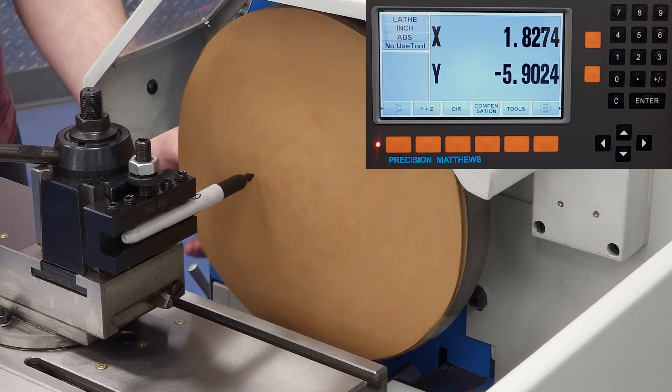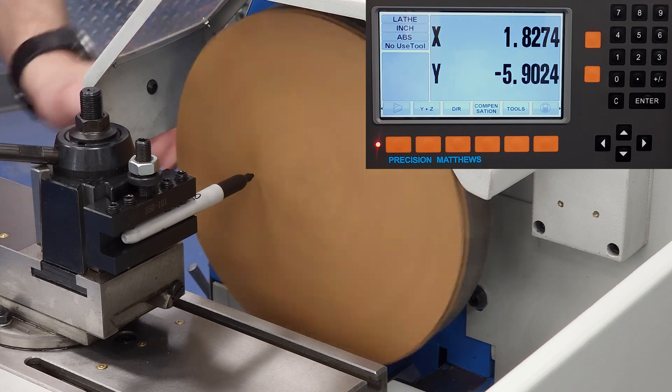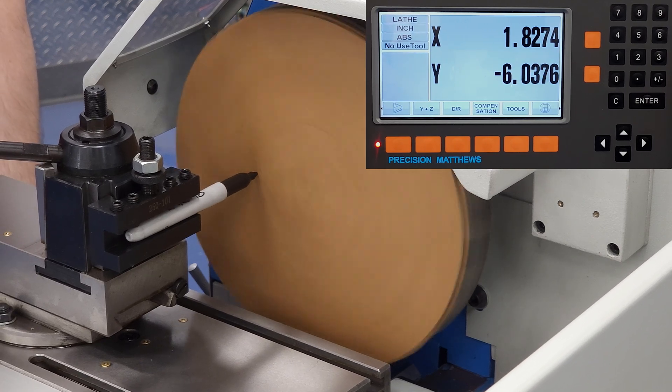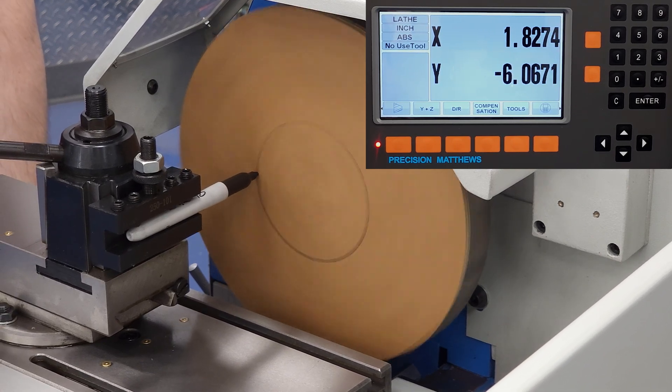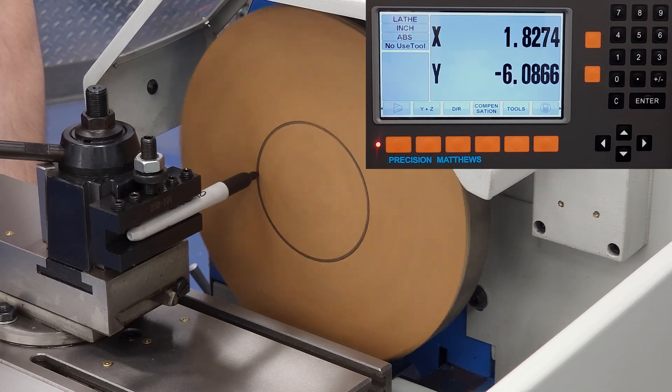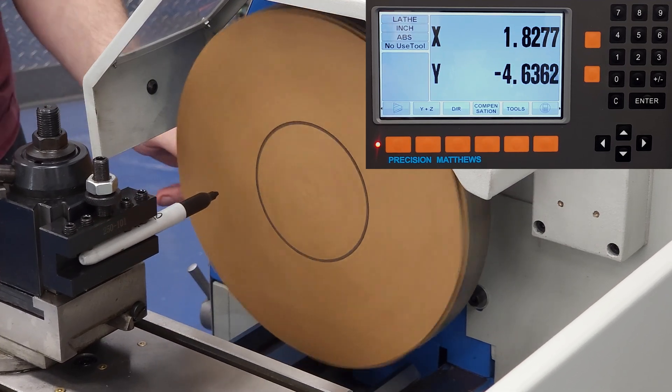Next, we'll do an example of if we prefer to work in radius mode. You can see now that the x-axis shows in black text, indicating radius mode. That is, we're measuring the direct movement of the cross slide, and the material we actually remove will be double that measurement.